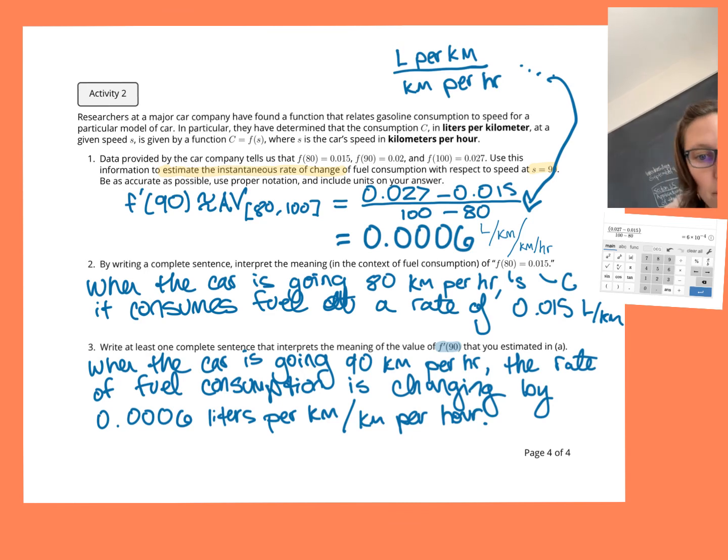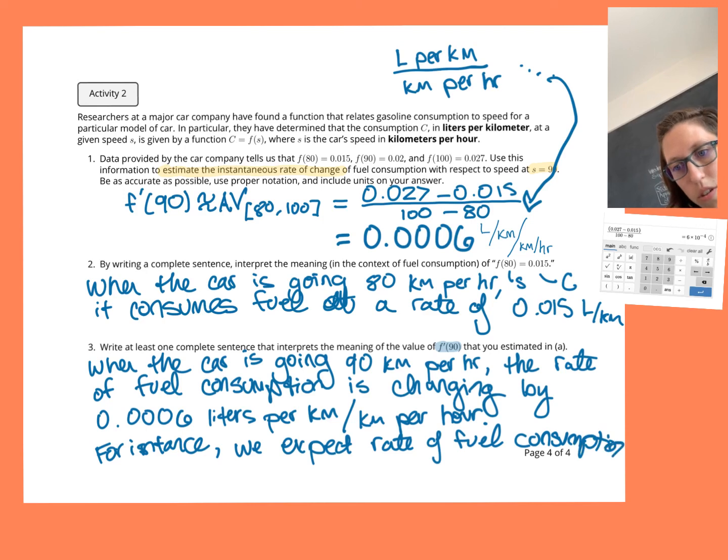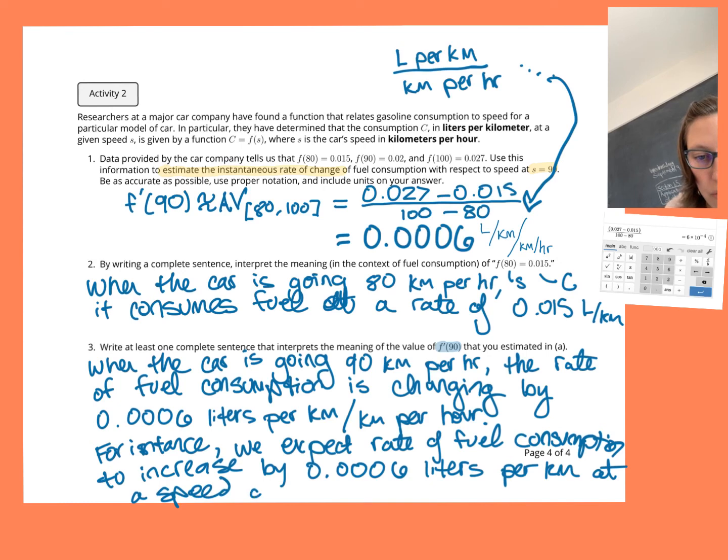For instance, we expect our rate of fuel consumption to increase by 0.0006 liters per kilometer at a speed of 91 kilometers per hour versus the rate at 90 kilometers per hour.